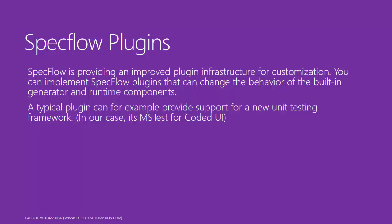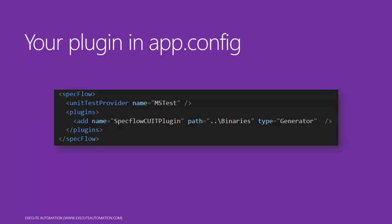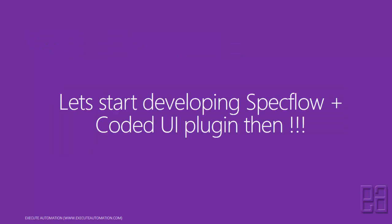You can implement a SpecFlow plugin that changes the behavior of built-in generator and runtime components. A typical plugin can, for example, provide support for a new unit testing framework — in our case, MSTest for Coded UI. Coded UI framework is built on top of MSTest, but the UI testing layer is still not supported out of the box in SpecFlow. Your plugin in the app.config will have a SpecFlow tag with a unit test provider set to MSTest by default, and when you create a plugin you add a plugins tag referencing the plugin you create. So let's start developing the SpecFlow plus Coded UI plugin.